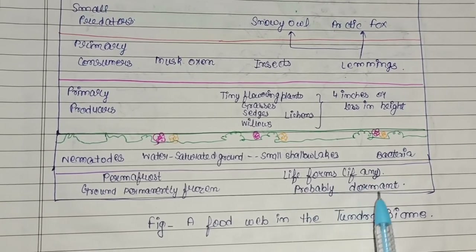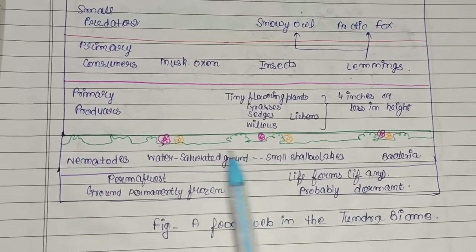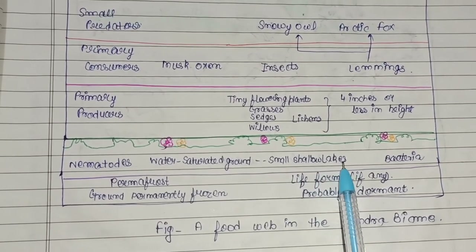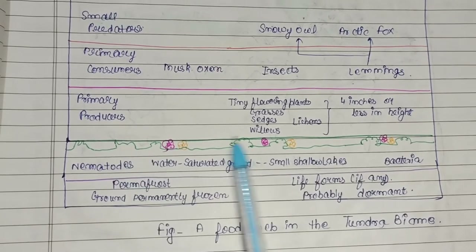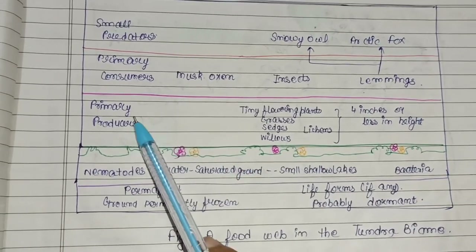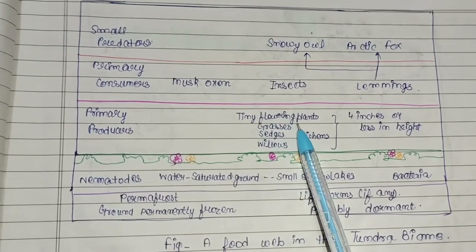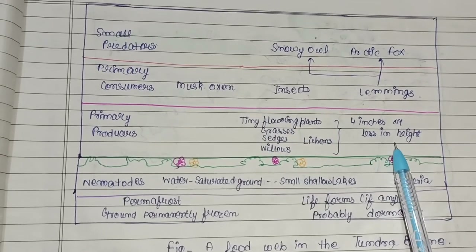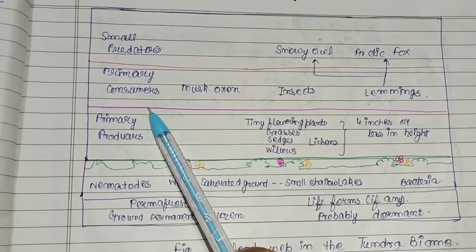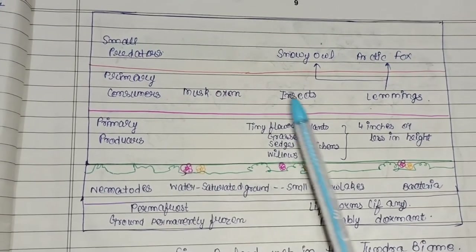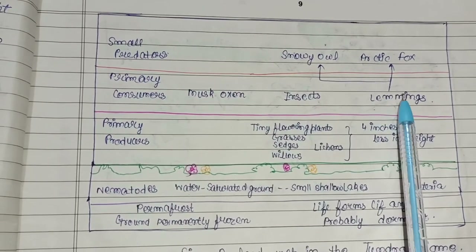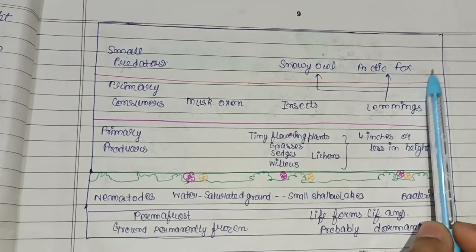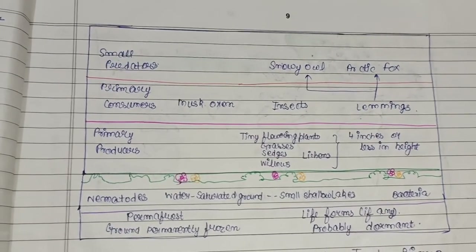The second layer is water-saturated ground with small shallow lakes, where some bacteria and nematodes are present. The primary producer stage includes tiny flowering plants, grasses, sages, willows, and lichens — four inches or less in height. Primary consumers include musk oxen, insects, and lemmings, which have their own adaptations. Small predators include the snowy owl and arctic fox. This completes the food web in the tundra biome.